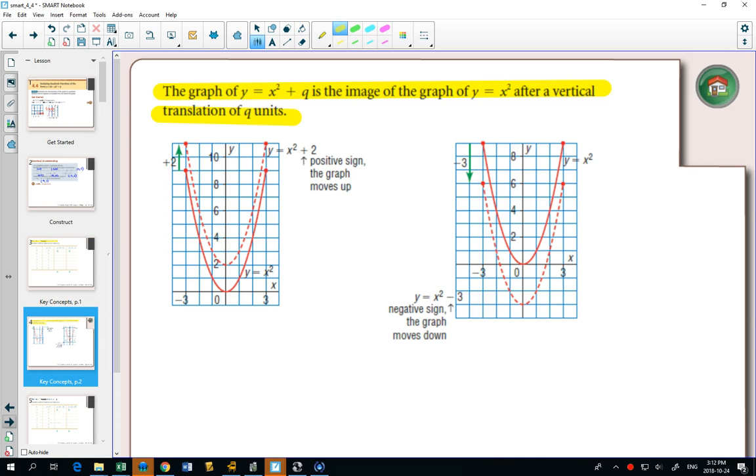Here they have x squared plus 2. That moved it up 2. Here they have x squared minus 3. That moves it down 3. But we already discovered that.